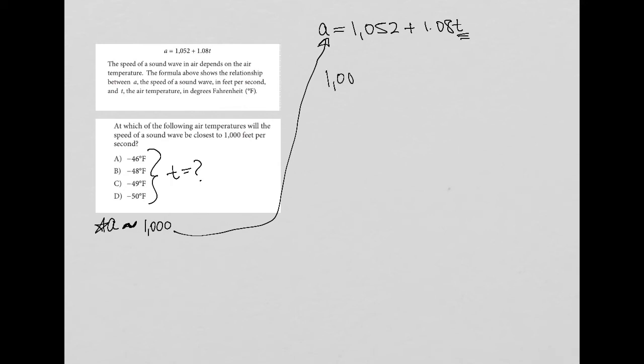I'd have 1,000 equals 1,052 plus 1.08T. I'm going to subtract 1,052 from both sides in order to isolate the T variable. So that's gone here. 1,000 minus 1,052 is negative 52. That's going to be equal to 1.08T.